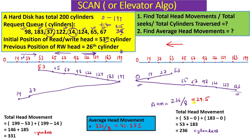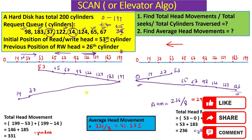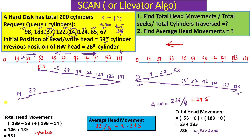The key rule to remember in the SCAN algorithm: if there are pending requests in the other direction, you must go to the last cylinder in the current direction before reversing. But once you have serviced the last request in the given queue, you do not need to go to the absolute last cylinder. This algorithm, similar to a real-life elevator, will be analyzed further in the next video.